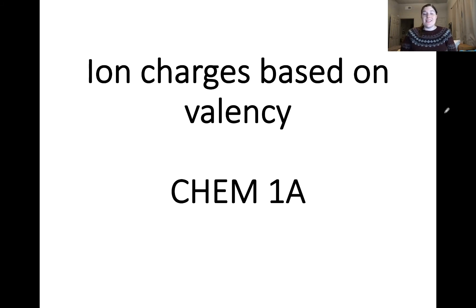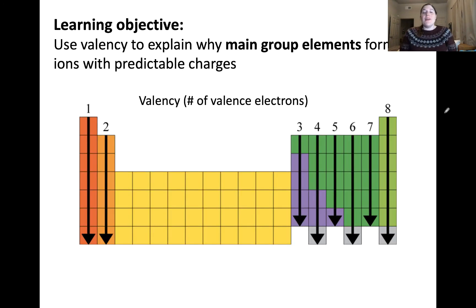In this video, I'll be discussing how we can determine the charges of main group atoms when they form ions. We've discussed previously that many main group elements form ions with predictable charge. In this video, we're going to figure out why that is. We're going to use the concept of valency to explain why certain main group elements form these ions with predictable charges.